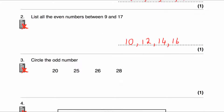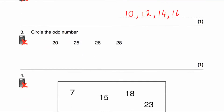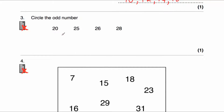Question number three says: circle the odd number. We've got 20, 25, 26, and 28. So 20 is even — it ends with a 0. 25 ends in a 5, so it's an odd number, so we'll circle that one. 26 is even and 28 is even as well. So 25 is the odd number, so we've circled 25.